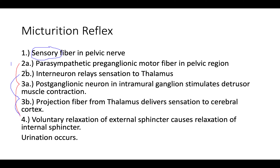The other pathway is you have the interneuron that's going to relay that sensation to the thalamus. So what's happening here is you're going to receive this signal, that signal then is going to go to the brain or the thalamus — that information center into the brain. And then you're going to get a projection fiber from the thalamus that delivers sensation to the cerebral cortex and eventually voluntary relaxation. So you have two different ways of going about it, and then finally, once you get here, urination is going to occur.